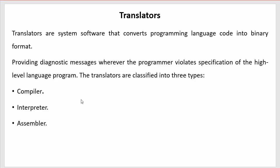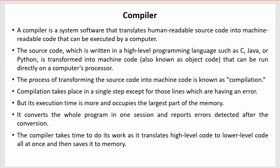In this video we will restrict our discussion only to the compiler, and in the next videos we will discuss interpreter and assembler. The compiler is a system software that translates human-readable source code into machine-readable code that can be executed by a computer. Whatever programming instructions a programmer writes — either in high-level or mid-level language — gets read by the compiler and converted into machine-readable code.